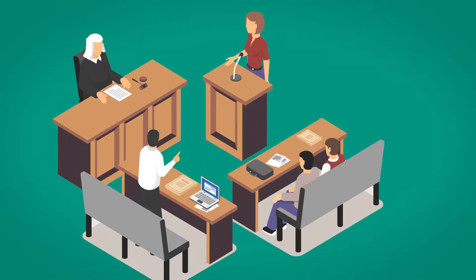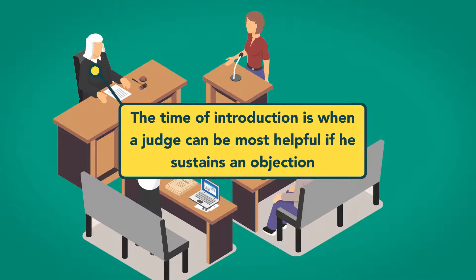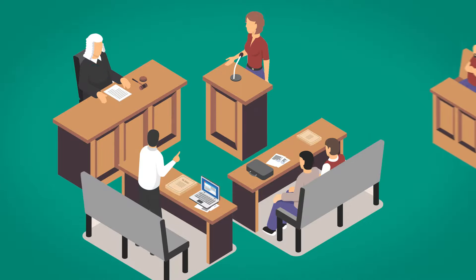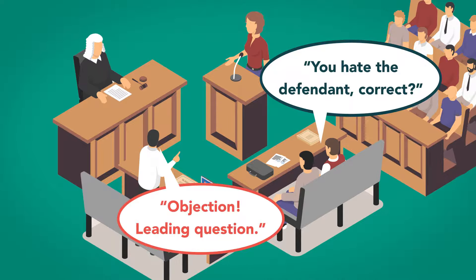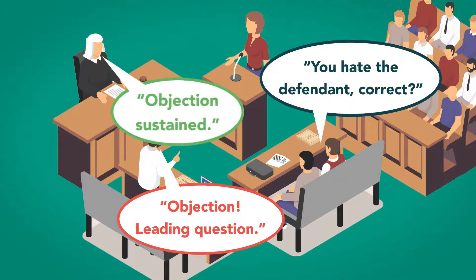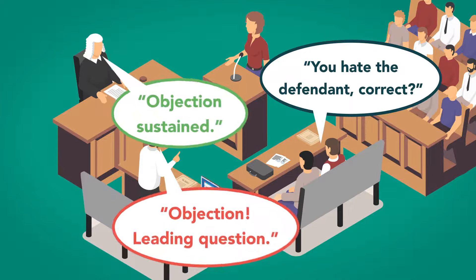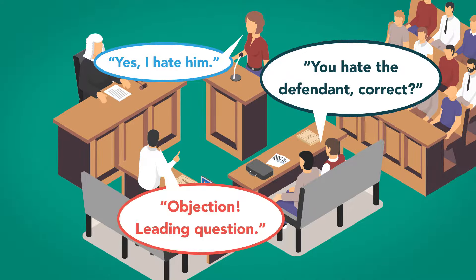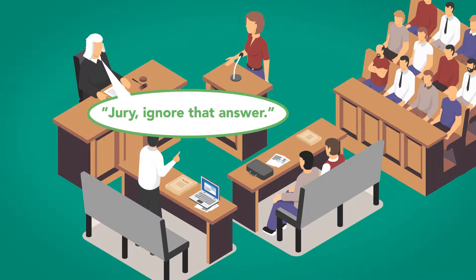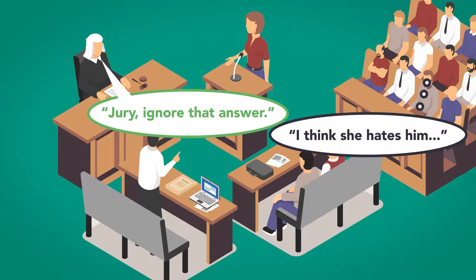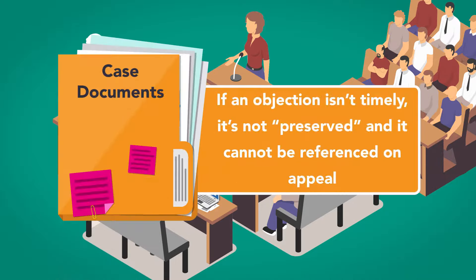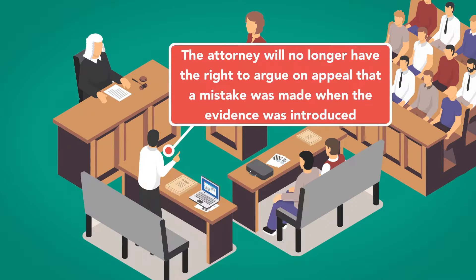The first reason timeliness is required is that the time of introduction is when a judge can be most helpful if he sustains an objection. For example, objecting as soon as an objectionable question is asked — before it is answered — may prevent the answer from ever being stated in open court. Objecting after the question is answered may bring a judicial admonition to the jury to ignore the answer, but just as one cannot unring a bell, one cannot ensure that the jury will truly ignore testimony it has heard, merely because the judge instructs it to. Additionally, if an objection is not timely, it's not preserved and cannot be referenced on appeal — the attorney will no longer have the right to argue that a mistake was made when the evidence was introduced.